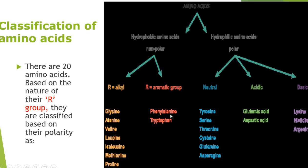The second classification is based on polarity — distinguishing between hydrophobic and hydrophilic amino acids. We have polar and non-polar amino acids. Those that possess polarity are hydrophilic. Learn this in detail, as it is important from an entrance exam point of view, though for theory exams, giving examples is sufficient.